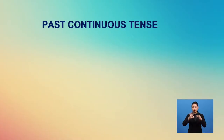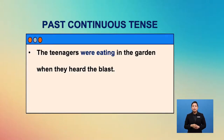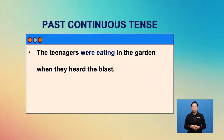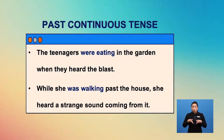We also use the past continuous in stories for two main reasons. The first is to set the scene before the action of the story begins. For example: 'The teenagers were eating in the garden when they heard the blast.' And: 'While she was walking past the house, she heard a strange sound coming from it.'